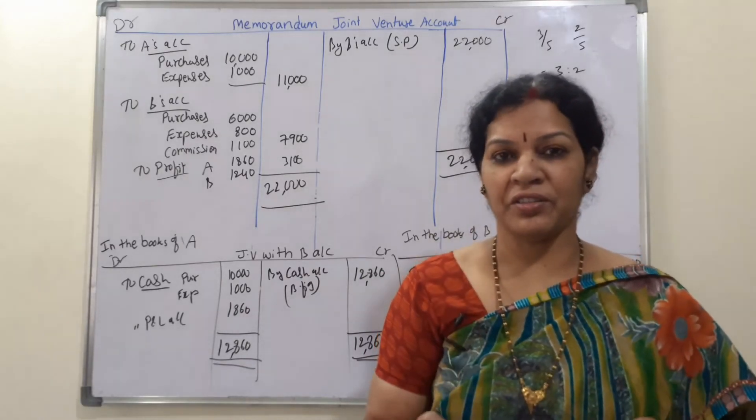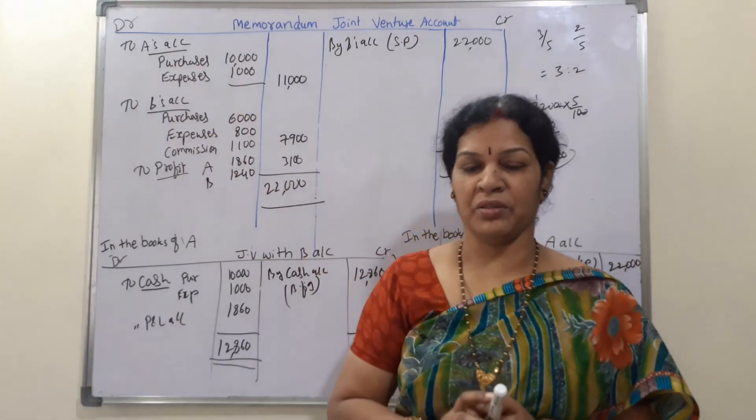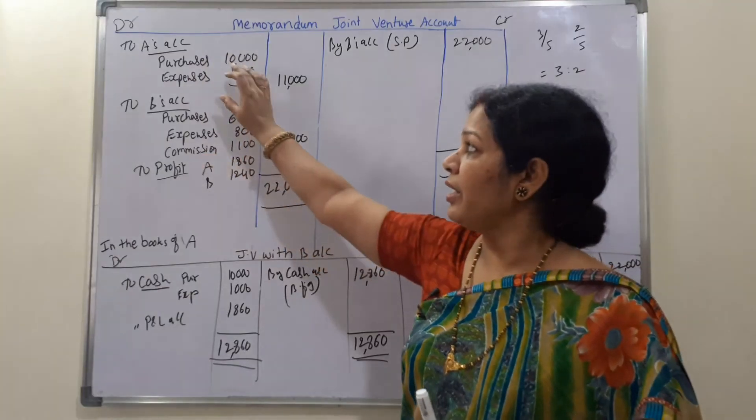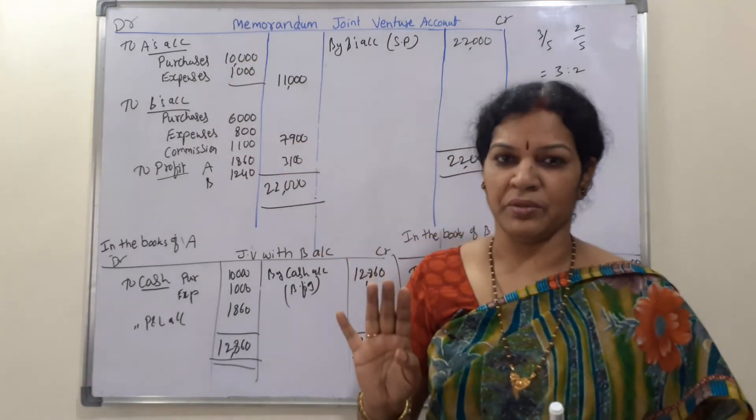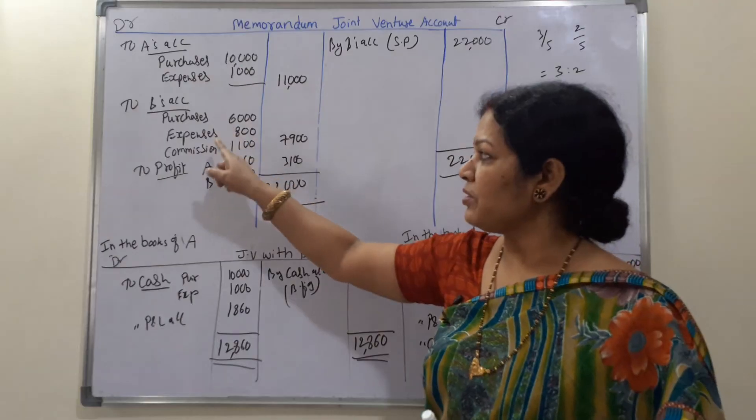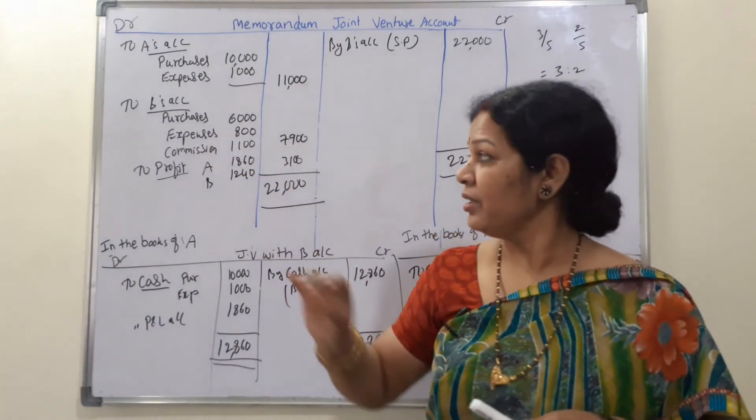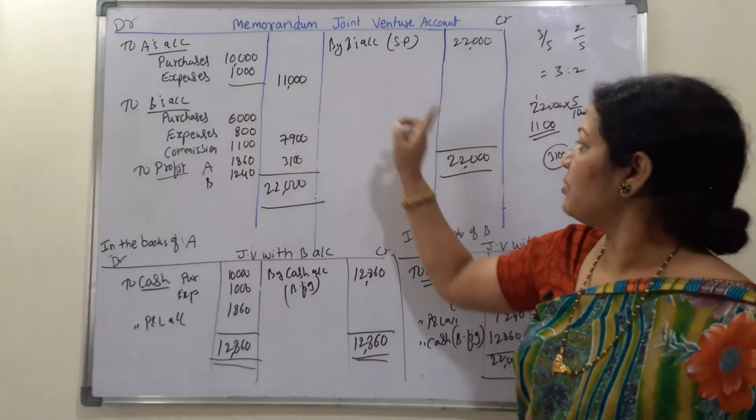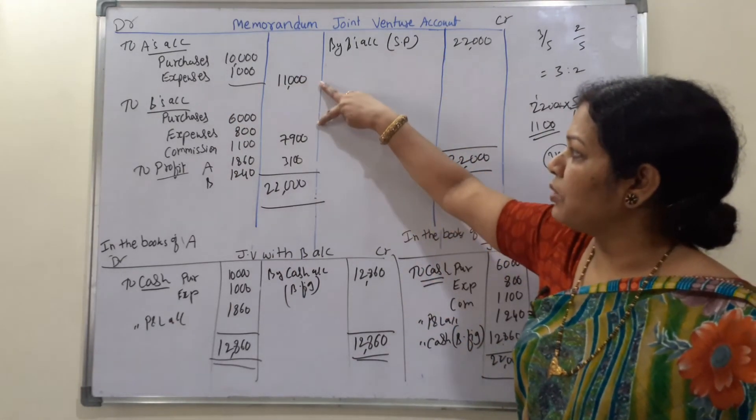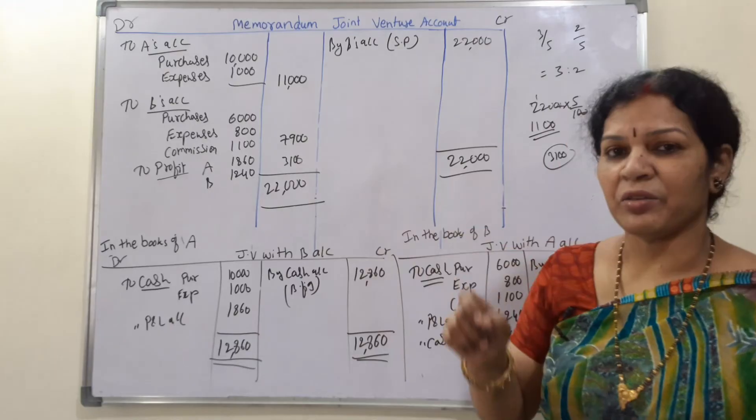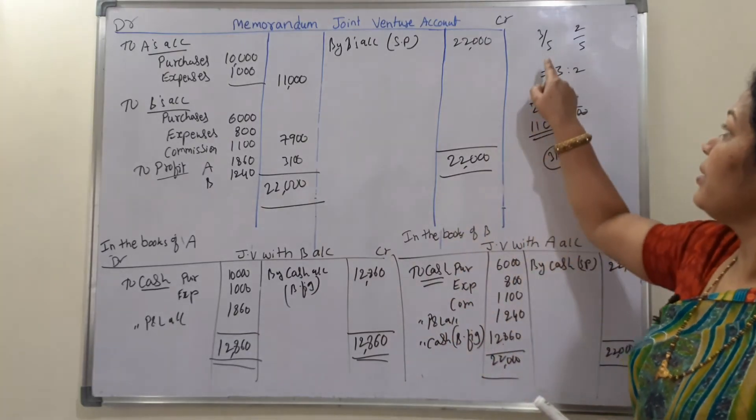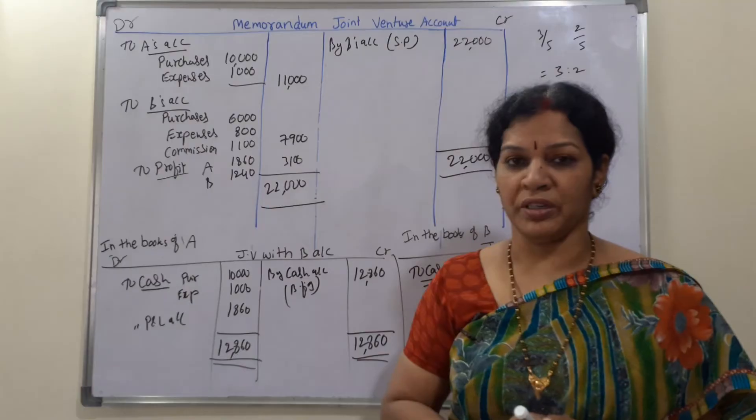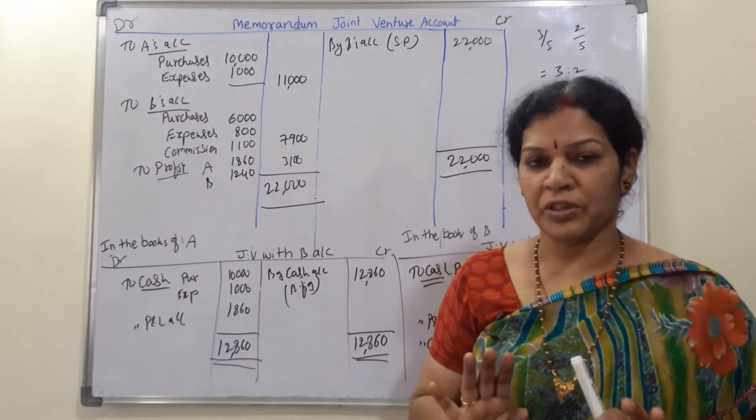Let me explain you once again, recap of this problem. First of all, memorandum joint venture we are preparing, so this is of both the coventurers. Whatever transactions are there, we are keeping a heading of A's account, B's account. Here A's purchases expenses are given. In the same way, B's purchases expenses and also commission. Credit side, you are finding only sales. 22,000 minus these two amounts, we are getting profit of 3,100 that they are going to share in the ratio of 3 is to 2. When we divide, they are getting 1,860 and 1,240. Memorandum of joint venture is over.